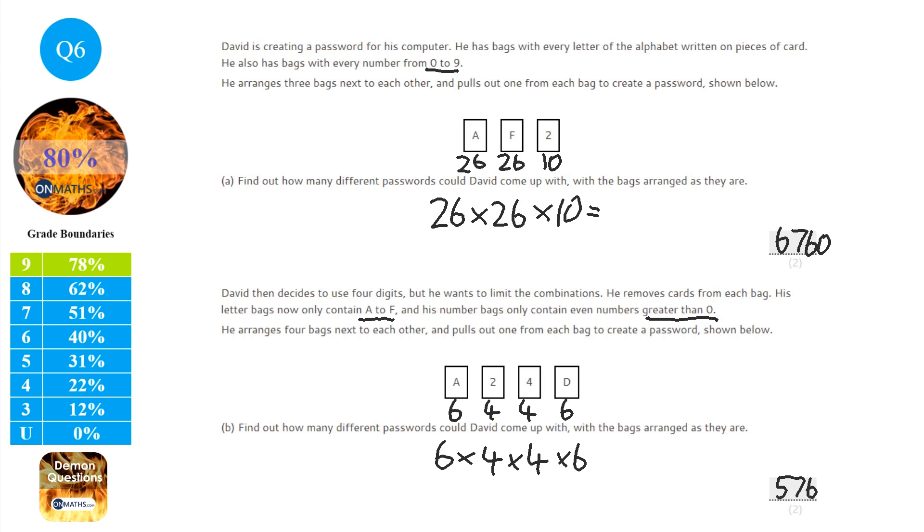Now that might seem confusing that there's an extra digit to the password and yet less combinations. But if you think about it there's significantly less letters and less numbers. So that's why it's a much lower number than part A.